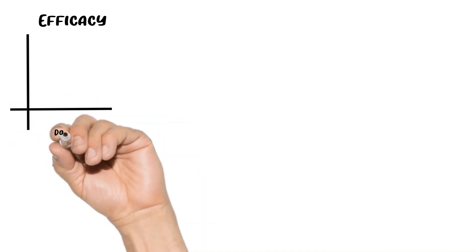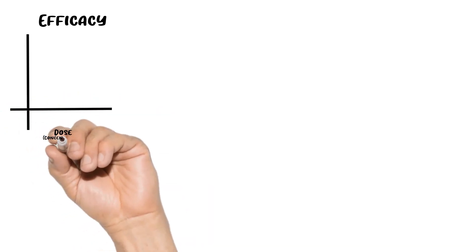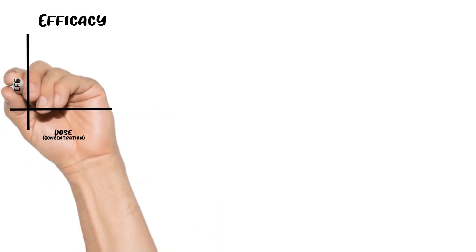I want to make a graph to help visualize this. On the x-axis, I'm going to put dose or concentration, and on the y-axis, I'm going to have the effect or activity of the receptor.